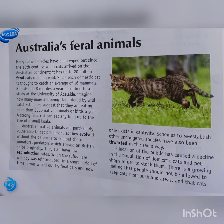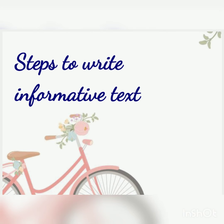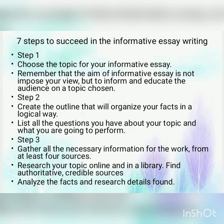Now let's learn how to write an informative text and what steps we have to include. There are seven steps to succeed in informative text writing. Step one: choose the topic for your informative text. Remember that the aim of informative text is not to impose your view but to inform and educate the audience. Step two: create an outline that will organize your facts in a logical way.